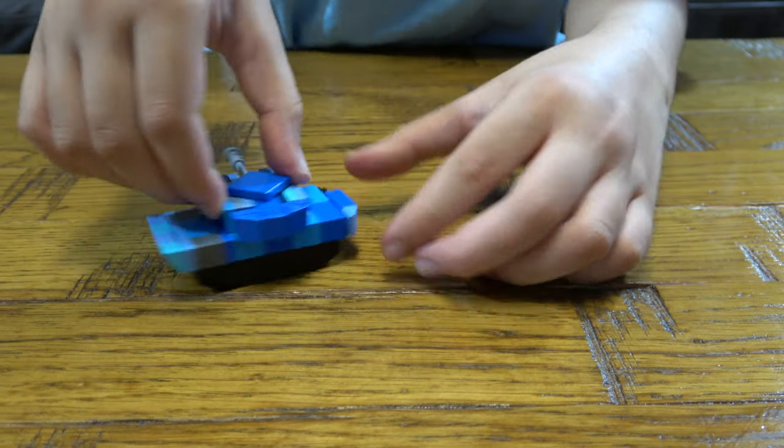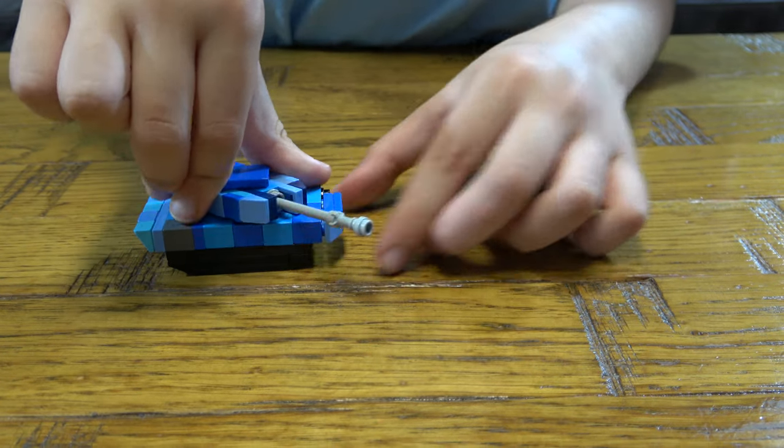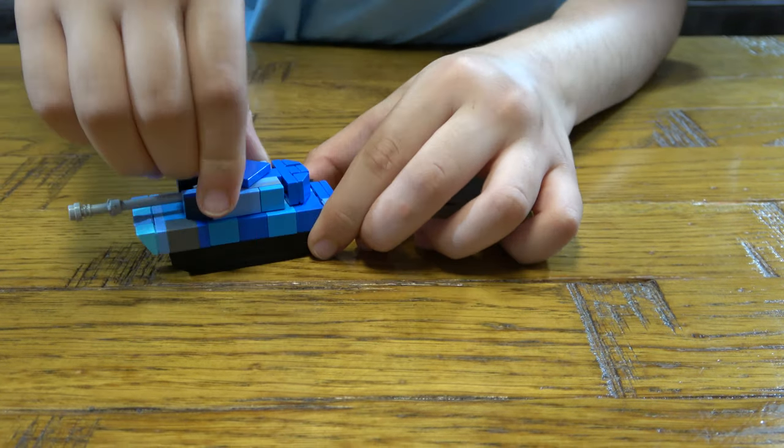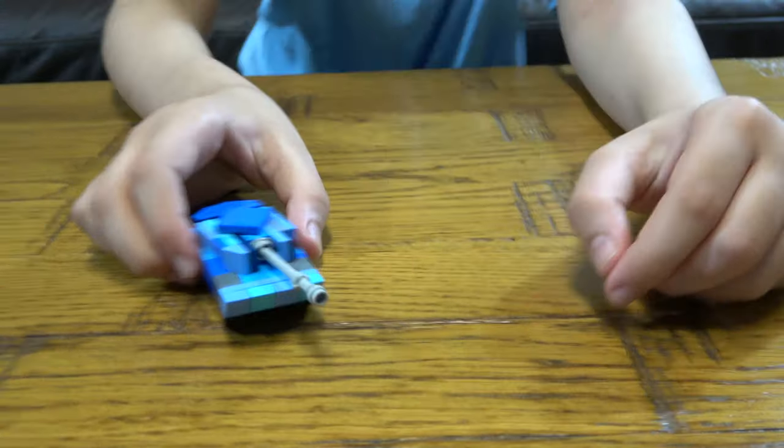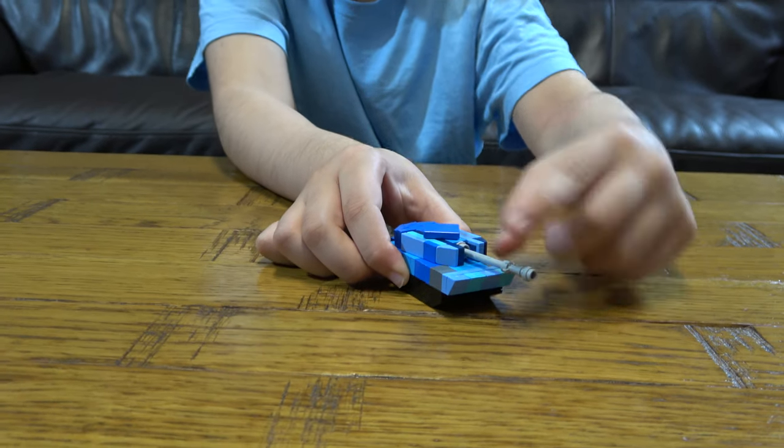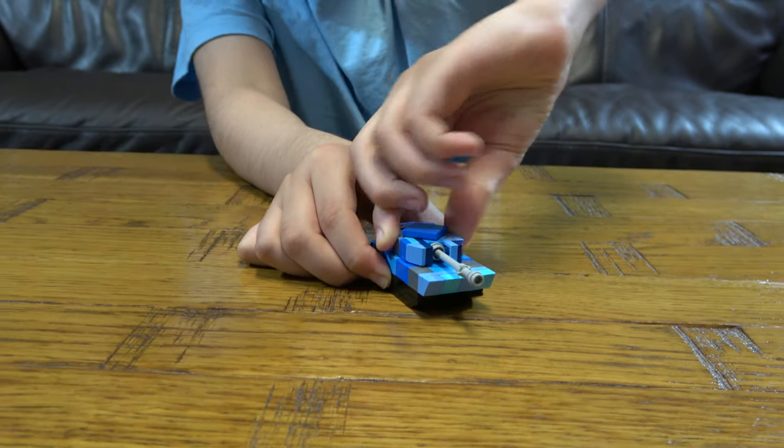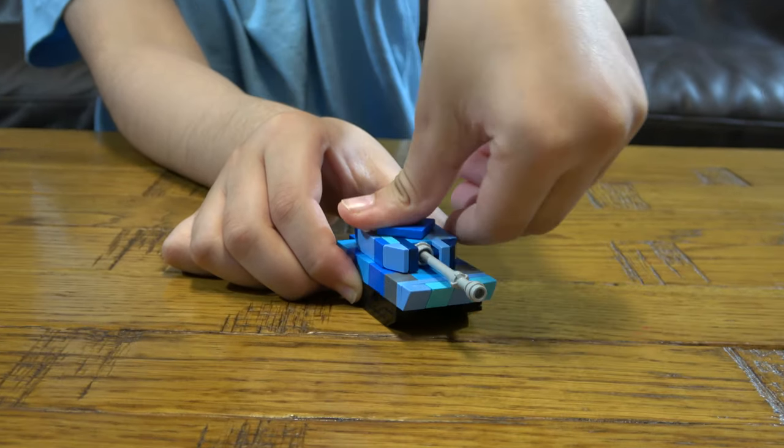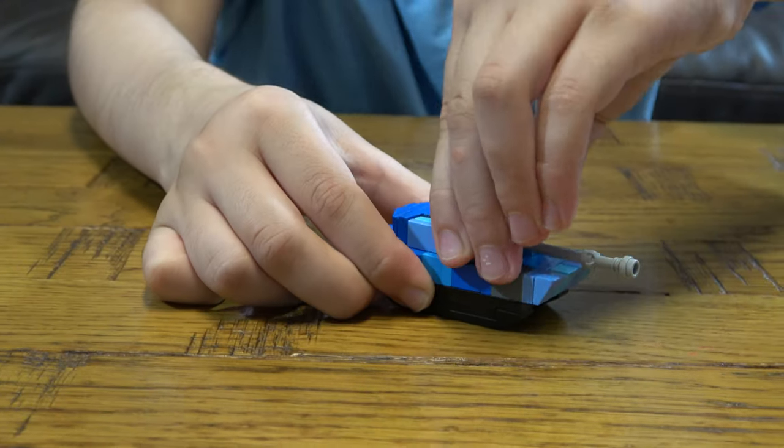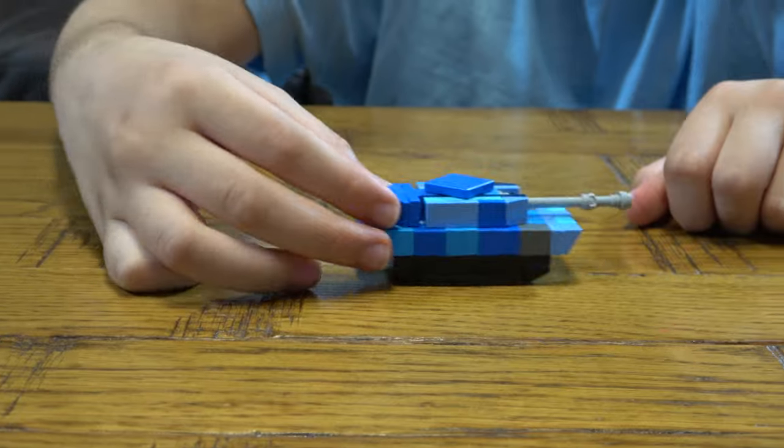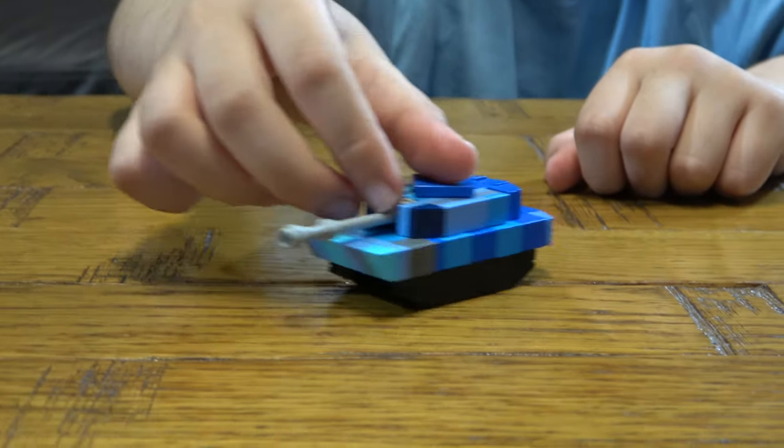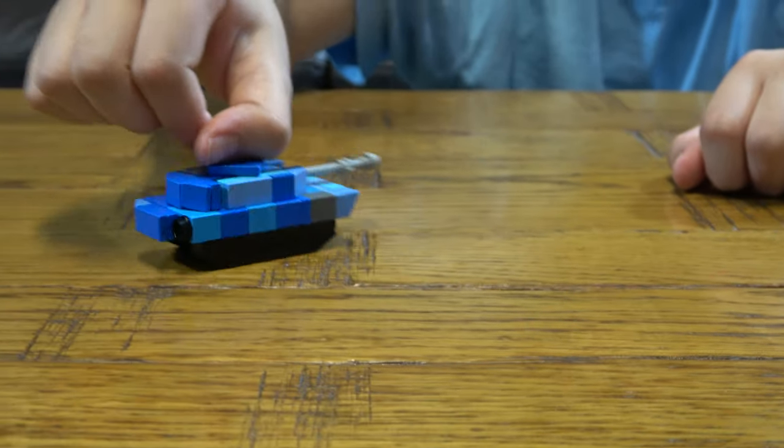And we can turn it around like a normal tank, 360, like so. And just do this. Sometimes it comes off because this one is a little stiff. Like that.